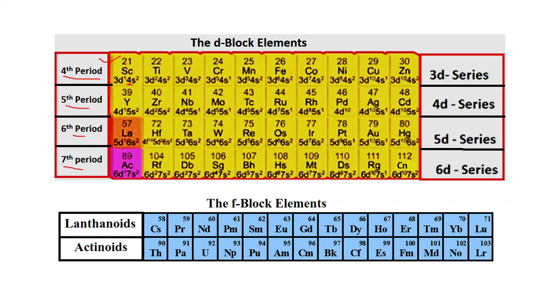Now you can see in case of 6th period, that is in 5D series, after lanthanum atomic number 57, there are 14 elements starting from atomic number 58 to 71 belonging to the lanthanoid series. These are the F block elements. In the same way, in the 7th period or 6D series, after actinium atomic number 89, there are 14 elements belonging to the actinoids, atomic number 90 to 103.